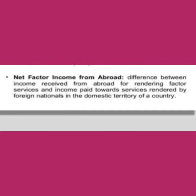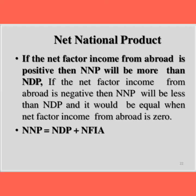Next, net national product: if net factor income from abroad is positive, NNP will be more than NDP; if negative, NNP will be less than NDP; and if zero, NNP equals NDP. The formula is: NNP = NDP + NFIA (net factor income from abroad). I hope this session is clear. Thank you, children, for watching this video.